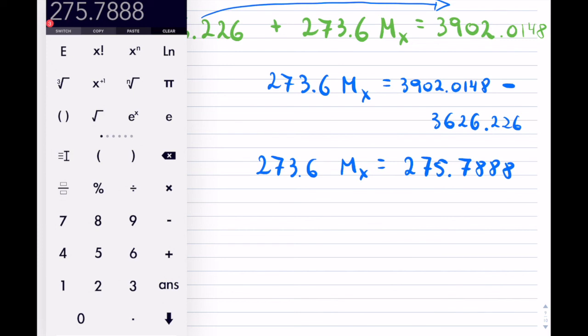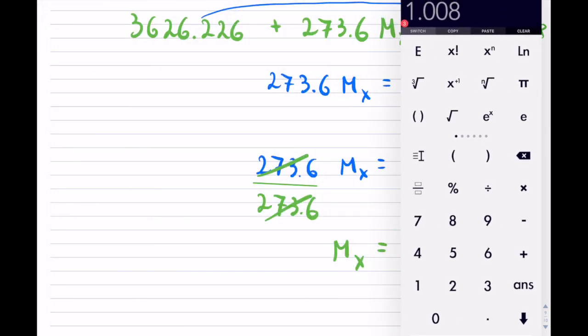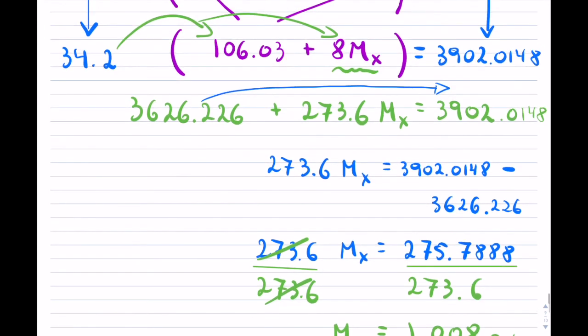What do I do now? Now I want to solve for Mₓ. So I'm going to divide both sides by 273.6 to get rid of that. And we will finally be able to solve for that molar mass. So now taking that and dividing it, 273.6 equals, and voila, 1.008. Don't forget, it's grams per mole. And that's the amount of work that you would have to do to try to get this thing done.